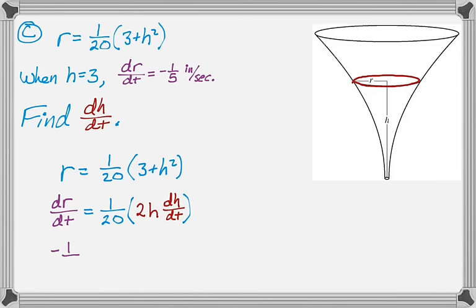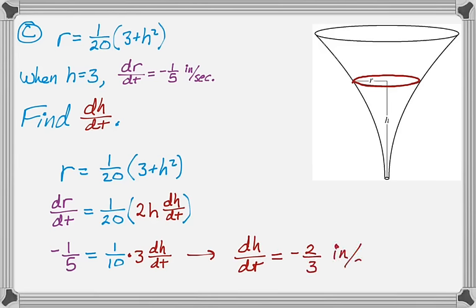Now I can just plug in and solve. So dr/dt is negative 1/5. That's 1/10 times 3 times dh/dt. So dh/dt is negative 2/3 inches per second. And that's all the questions.